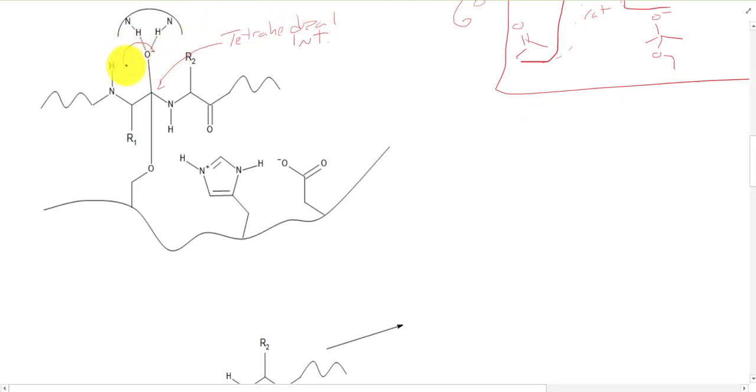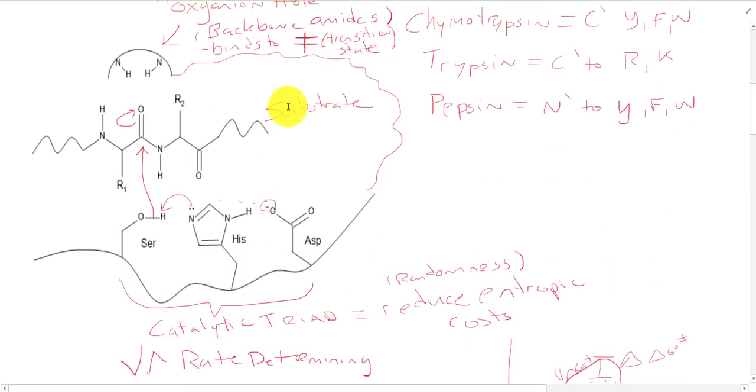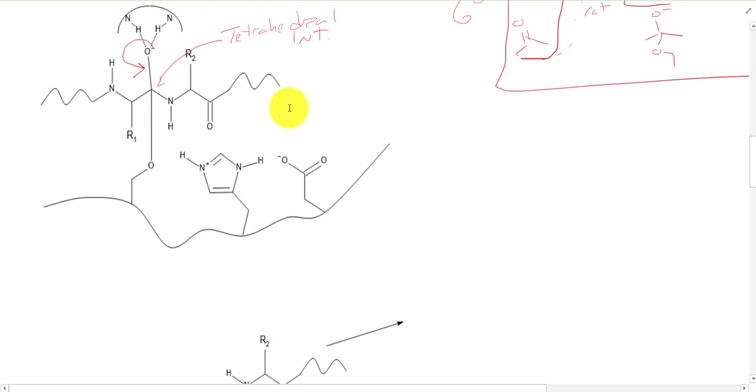Our electrons on the carbonyl are going to be able to push that and kick off the leaving group. The leaving group could either be our O minus, which could possibly happen. And that would be, you know, the reverse, going backwards. Or what we could do would be to kick off the other group. N minuses are going to be a lot stronger bases than O minuses. If we want to kick off the N and actually make reactive progress, we're going to have to protonate the histidine in the back.